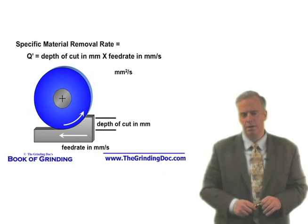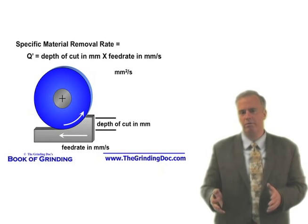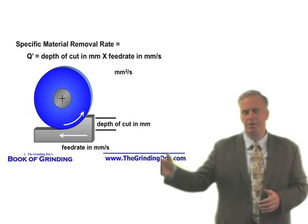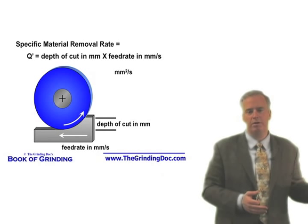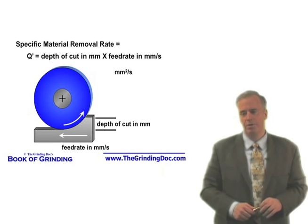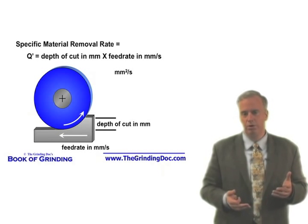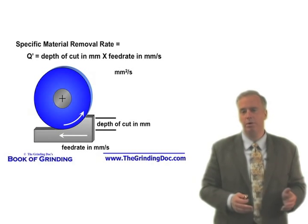Tell your operators they should be grinding during roughing at a specific material removal rate of around five. If you choose parameters and you're doing 15, you're going to be in trouble. If your specific material removal rate is only one, you can do better — cut that cycle time and still probably not have issues with burn, chatter, and whatnot. Figure out what specific material removal rates are good for your particular wheel, then use that for pretty much all your roughing operations for that wheel-workpiece combination.